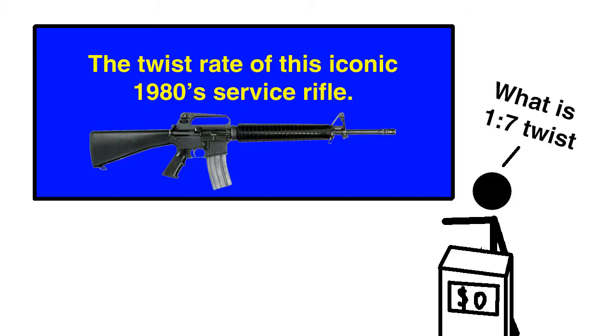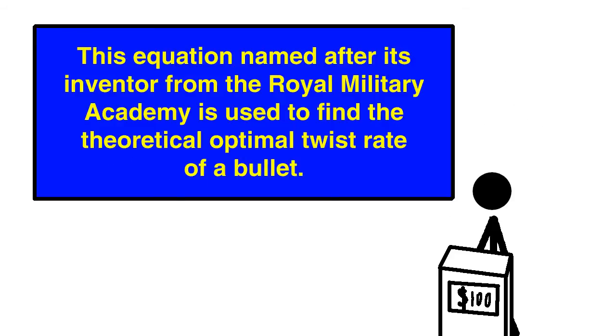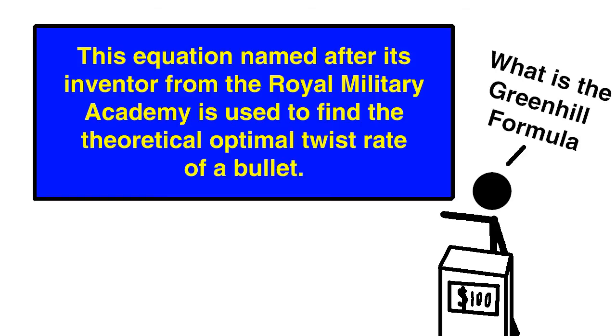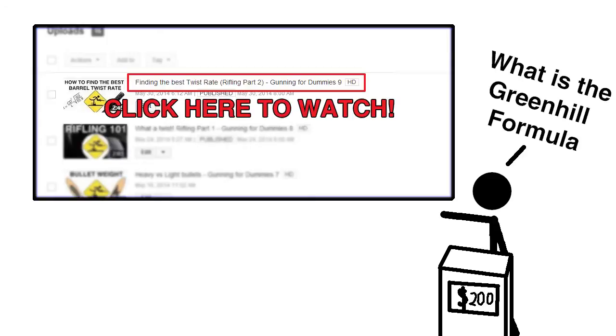Getting the right twist rate is a very important subject in firearms. There are equations to find the exact theoretical twist rate for a given bullet, one of which is the Greenhill formula which was covered in a previous video.